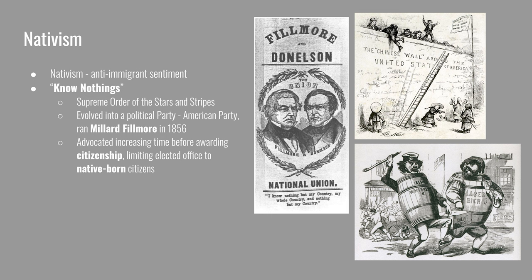The Know-Nothings evolved into a political party — unofficially the Know-Nothing Party, but officially called the National Union Party. They got former President Millard Fillmore to run as their presidential candidate in 1856. They advocated for increasing the time to award citizenship from 5 years to 21 years, and wanted to limit eligibility for elected office only to native-born citizens — meaning even naturalized immigrants could not run for office. Their fear-mongering is represented in a cartoon on screen, where an Irish man wearing a whiskey barrel and a German man with a beer barrel steal a ballot box, instilling fear that immigrants were stealing elections.